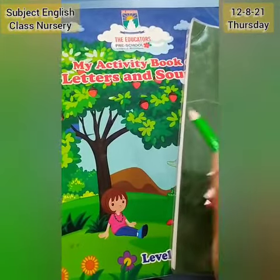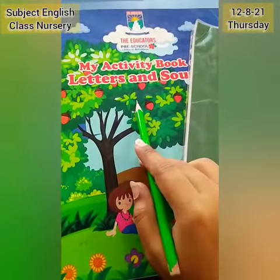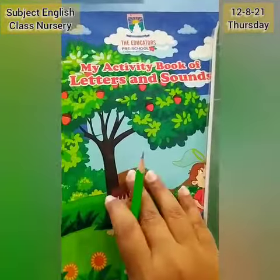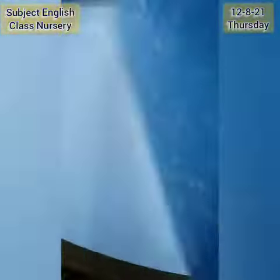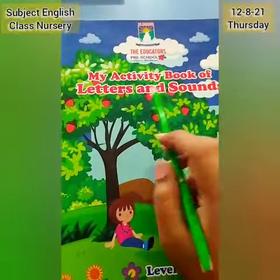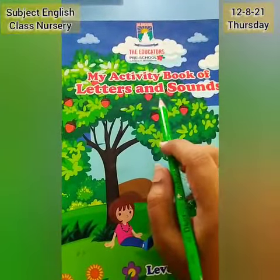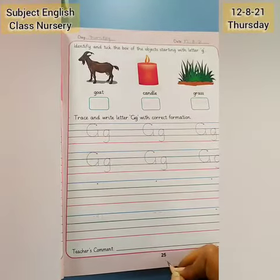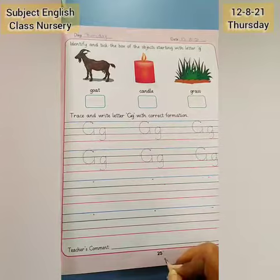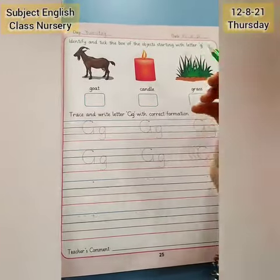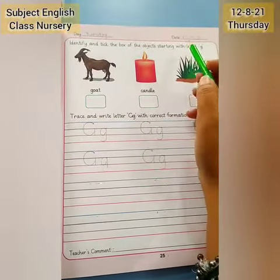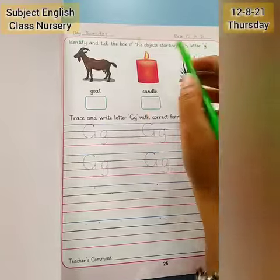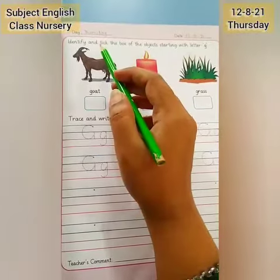This is your English unit. Take out your English activity book and your English copy, and open your English activity book of letters and sounds. Open page number 25. This is page number 25 and the date here is 12 August 2021. And the day here is Thursday.